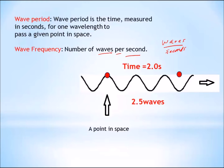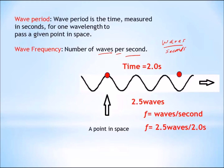So let's go ahead and do that. Frequency is waves divided by seconds. If we set that problem up we have 2.5 waves divided by 2.0 seconds. Work it out and it comes out to 1.25 waves per second.